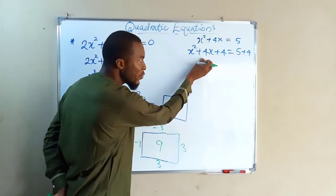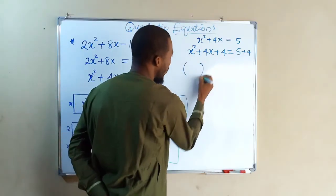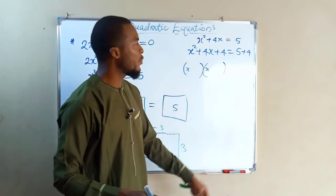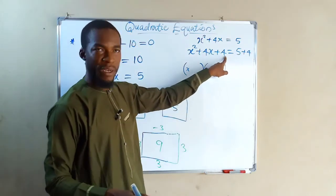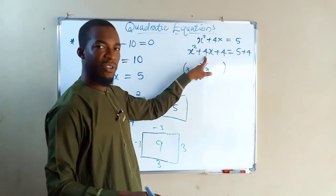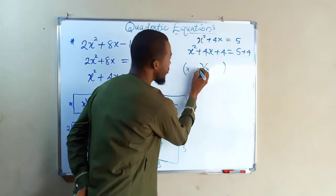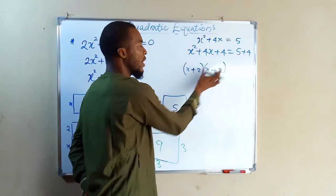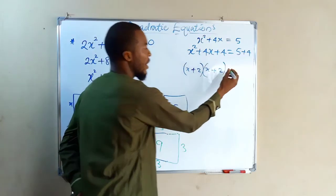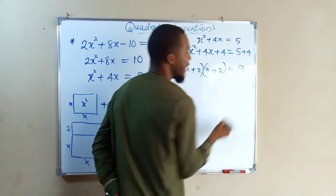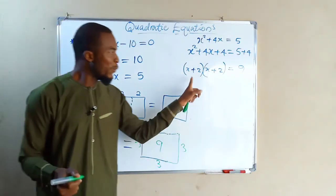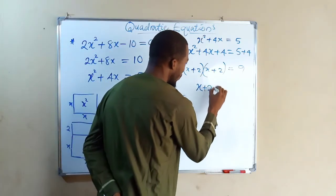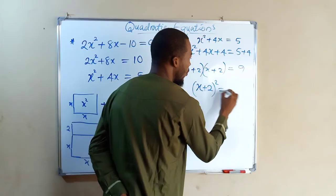Now let us factorize the left-hand side. Think of two numbers which when multiplied give 4 and when added give 4 — those numbers are 2 and 2, because 2 times 2 is 4 and 2 plus 2 is 4. On the right-hand side we have 9. Since the two factors are the same, we can write x plus 2 squared equals 9.